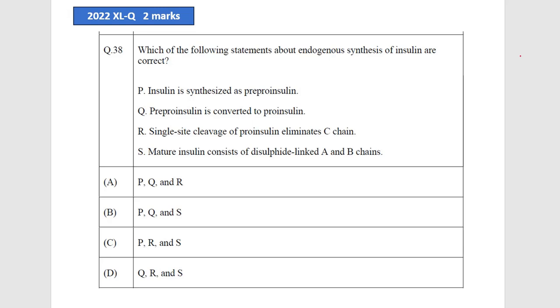Insulin is an enzyme which regulates blood glucose levels. This is a question about the endogenous synthesis of insulin. The options are: insulin is synthesized as pre-pro-insulin, pre-pro-insulin is converted to pro-insulin, single-site cleavage of pro-insulin eliminates the C chain, and mature insulin consists of disulfide-linked A and B chains. These are the four options.